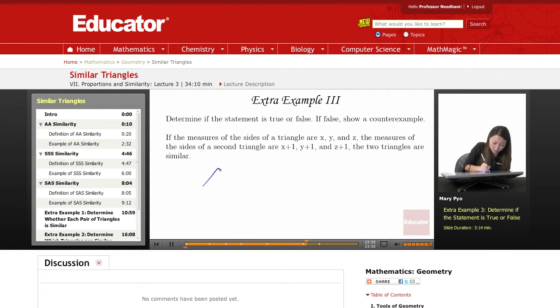So here is triangle 1. Let's see, this is triangle 2. So that means if this is x, y, and z, this is x plus 1, y plus 1, and z plus 1. Are they similar?